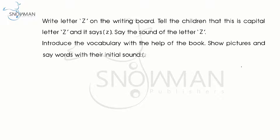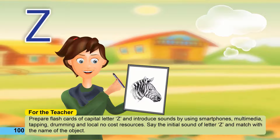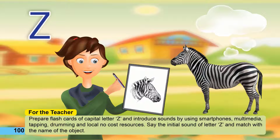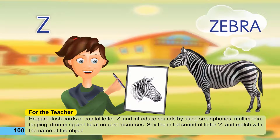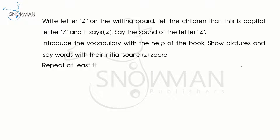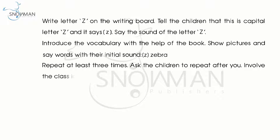Practice the initial sound: Z — Zebra. Z — Zoo. Z — Zebra. Repeat at least three times. Ask the children to repeat after you and involve the whole class in this process.